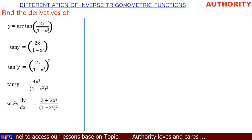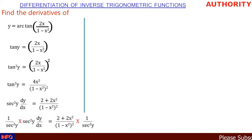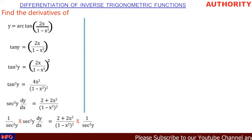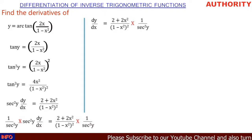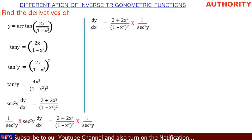We are going to multiply both sides by 1 over sec squared y. The sec squared y cancels on the left, so we are left with dy/dx equals 2 plus 2x squared all over (1 minus x squared) squared, times 1 over sec squared y.